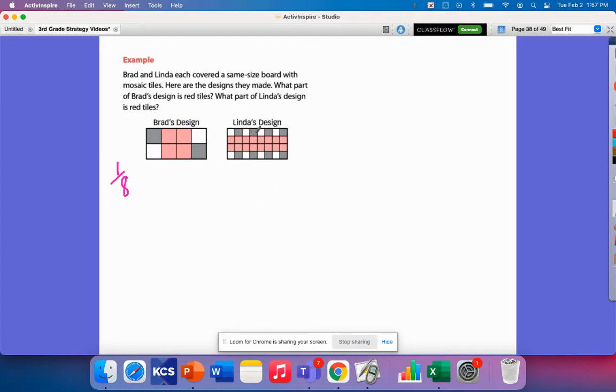Okay, now let's see how many tiles Linda has. She has a lot more tiles. Although her board is the same size, these are smaller tiles. So what I'm going to do is I'm going to count how many rows I have and then how many columns I have. So I have one, two, three, four rows of one, two, three, four, five, six, seven, eight. Four rows of eight. So four times eight would be 32. So each one of these tiles represents one out of 32.